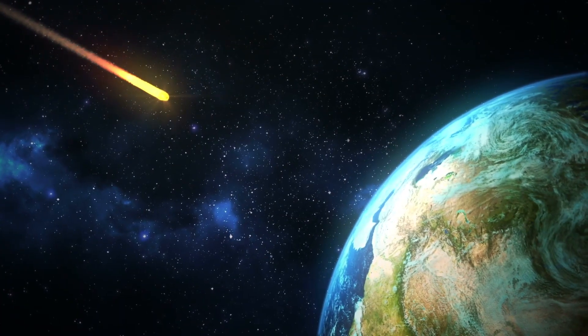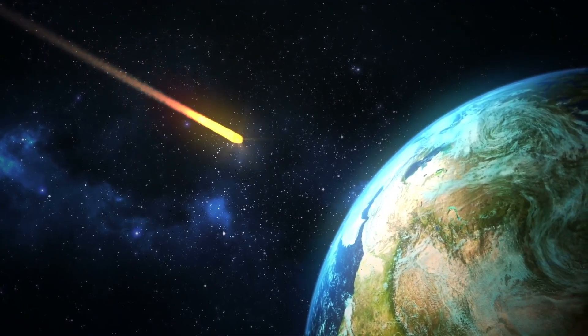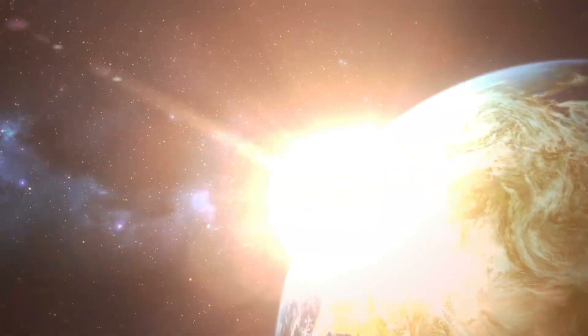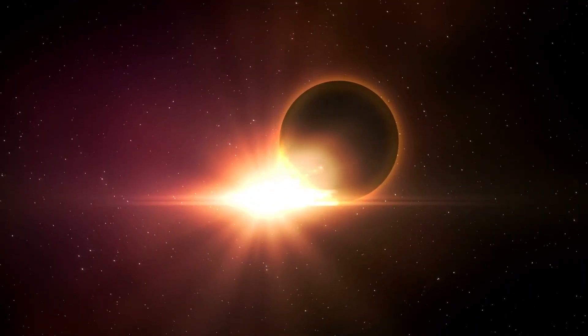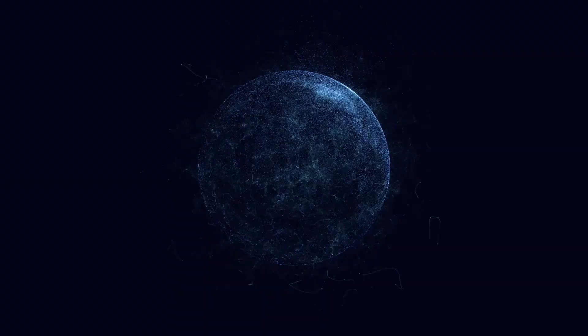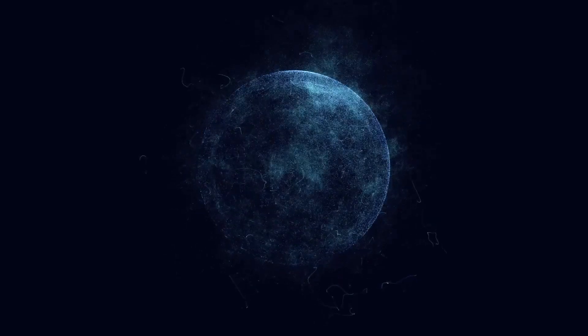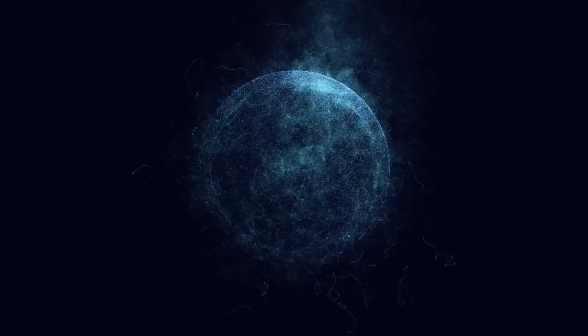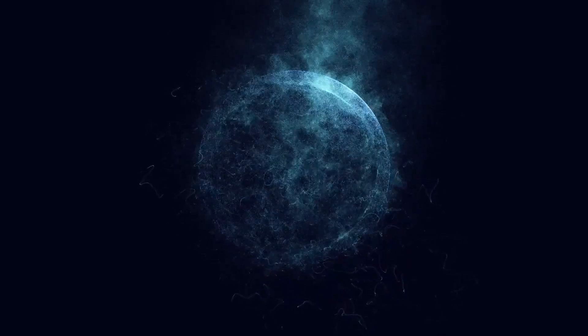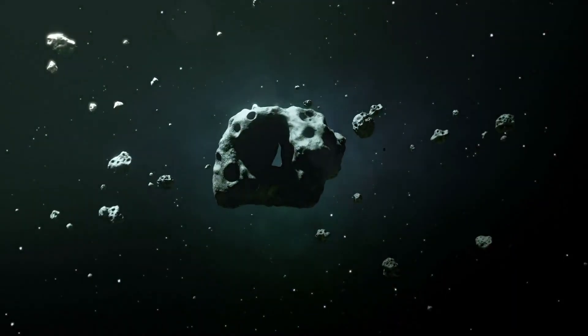However, based on current understanding of Earth's formation, less than one percent of Earth's material is believed to have accreted after the Moon formed. This implies that any material accreted later must have been highly water-rich. Studies of early solar system dynamics suggest that icy asteroids could have been delivered to the inner solar system, including Earth, if Jupiter had migrated closer to the Sun during this period.